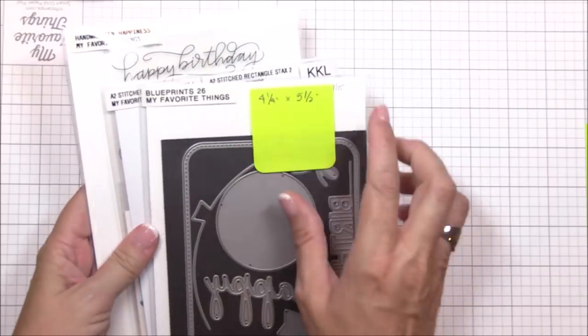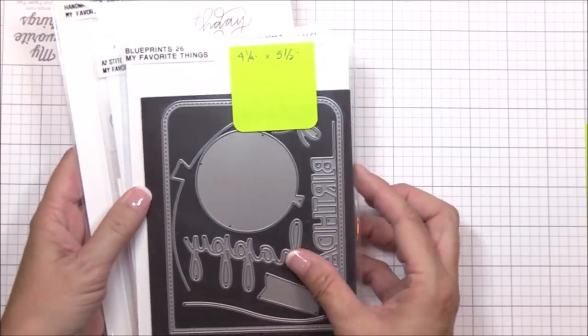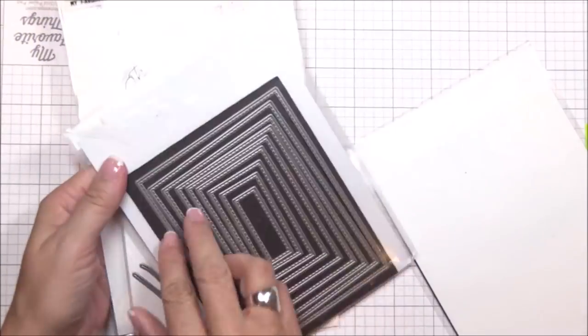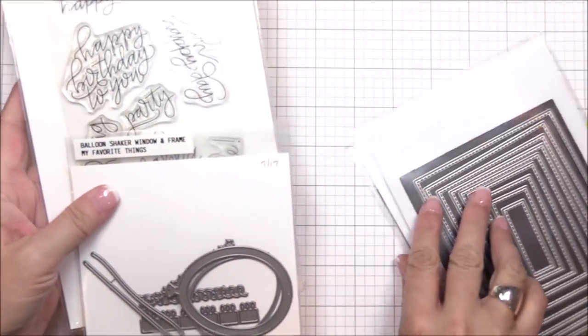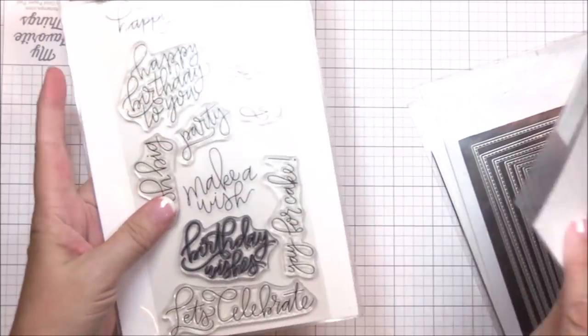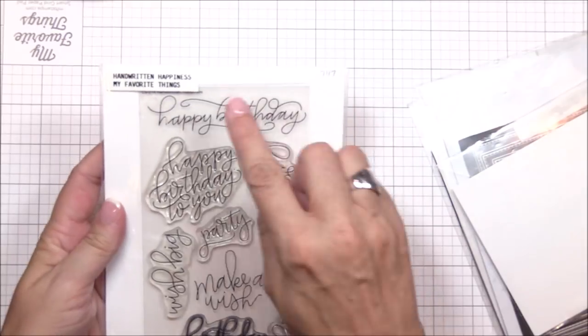To create my project, I'm using several of the dies from the Blueprints 26 die-namics, the A2 Stitched Rectangle Stacks Set 2 die-namics, the Confetti dies from the Balloon Shaker Window and Frame die-namics, and two of the sentiments from the Handwritten Happiness stamp set.